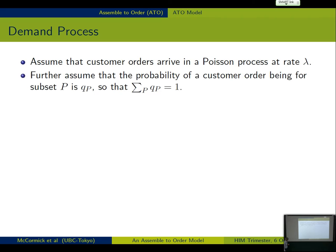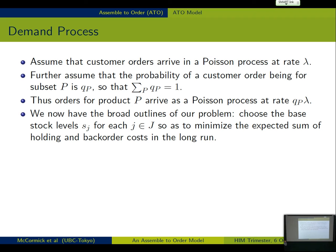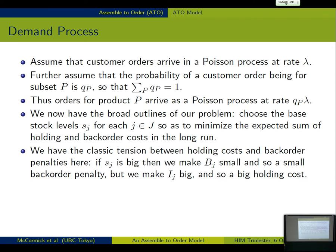That the choice of the base stock inventory level for one component affects not only its own cost, but the cost of other items through this backorder cost, which is happening on arbitrary subsets. So this makes it a difficult problem. We're going to assume that things are arriving in a Poisson process. And so we want to choose the base stock levels so as to minimize the expected sum of holding and backorder costs in the long run. So there's a classic inventory tension here. If we make the base stock levels high, then we're not going to have very many backorders, but we're going to have big holding costs. If we make the base stock levels low, exactly the inverse, we're going to save on holding costs, but we're going to have big backorder costs. We want to find equilibrium in between.